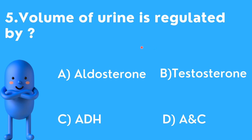Fifth question: Volume of urine is regulated by — options are A) Aldosterone, B) Testosterone, C) ADH, D) Both A and C. ADH is the anti-diuretic hormone, also known as vasopressin. Both aldosterone and ADH regulate the volume of urine, so the answer is both A and C.